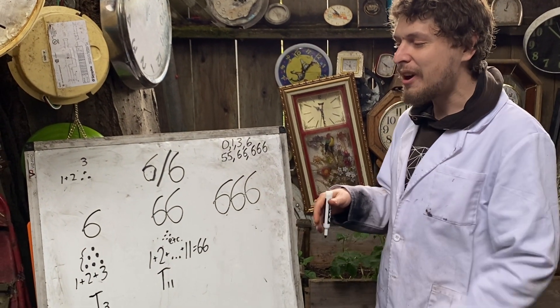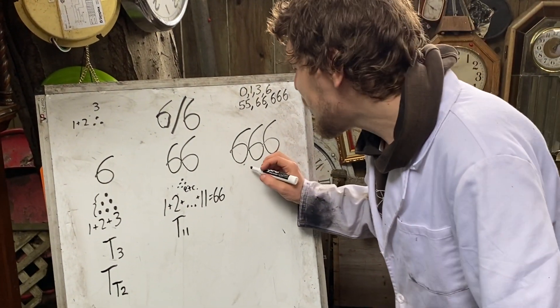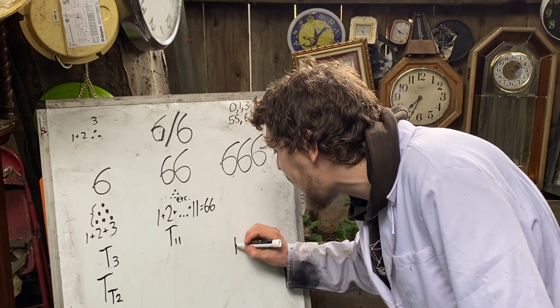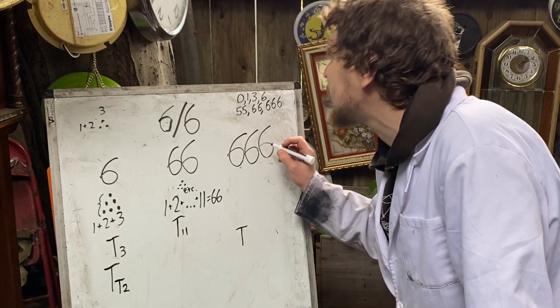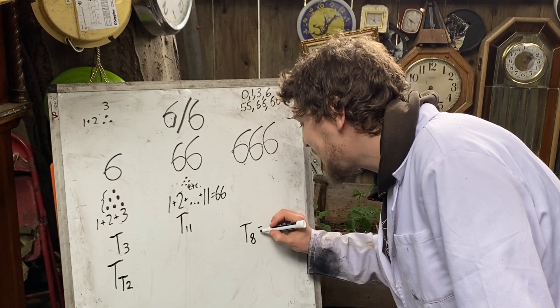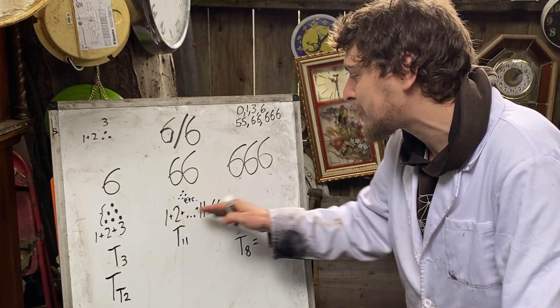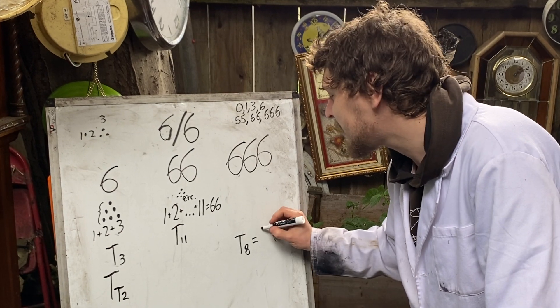And not only is it triangular, but it's doubly triangular. Because if I look at what the, wait, let's see, the eighth triangular number is, turns out the sum of the first eight numbers from one through eight gives me 36.